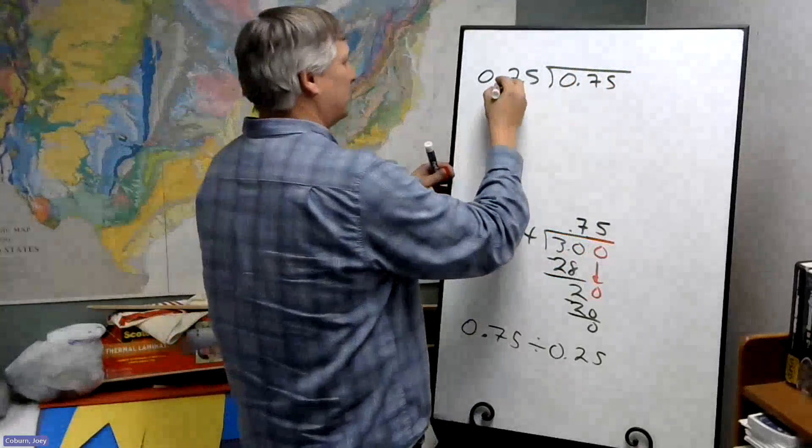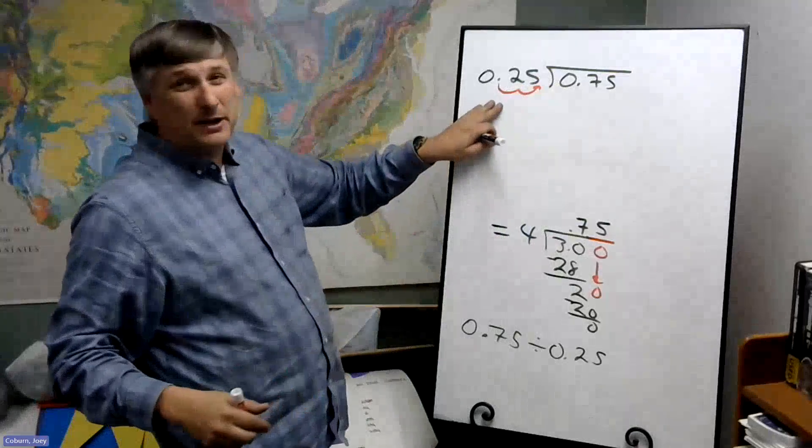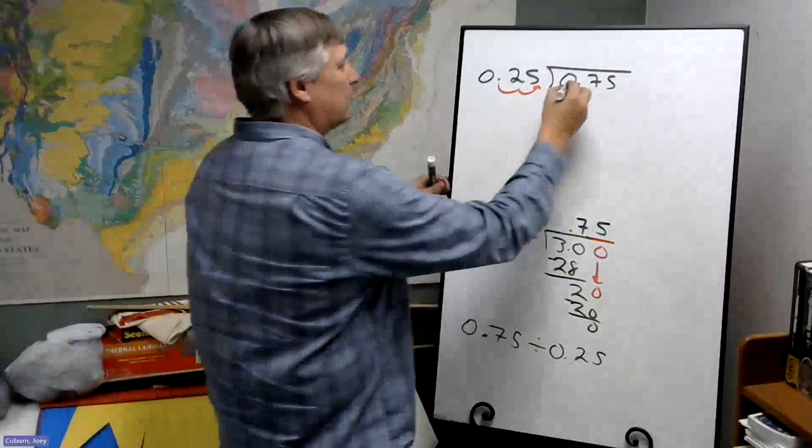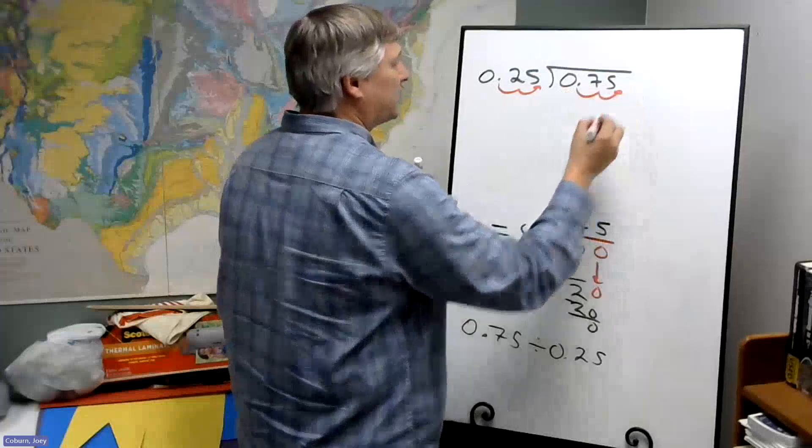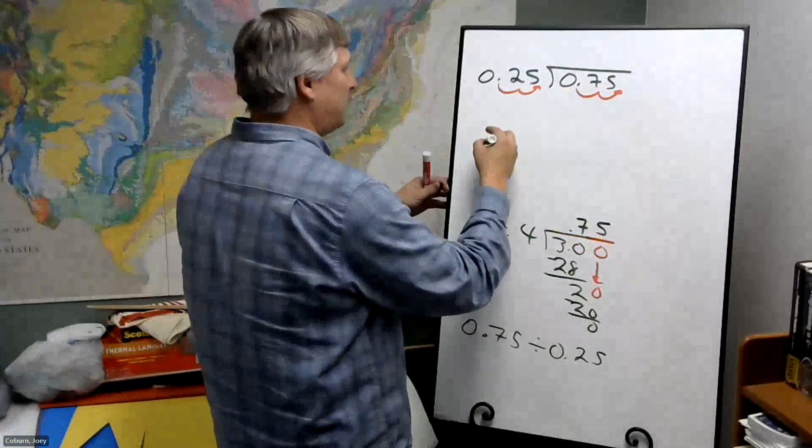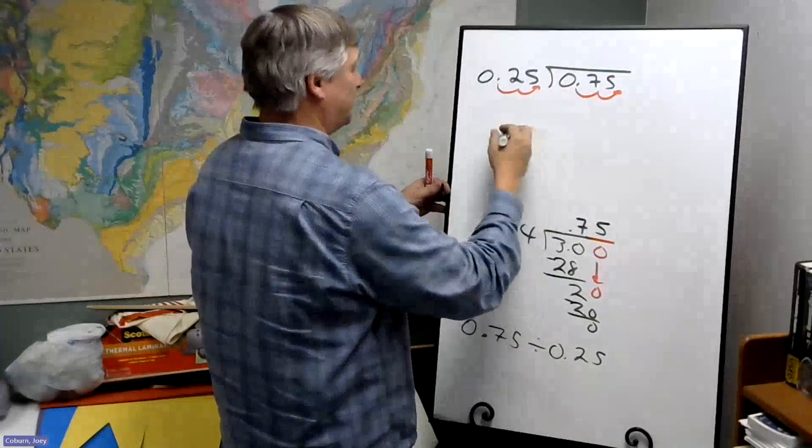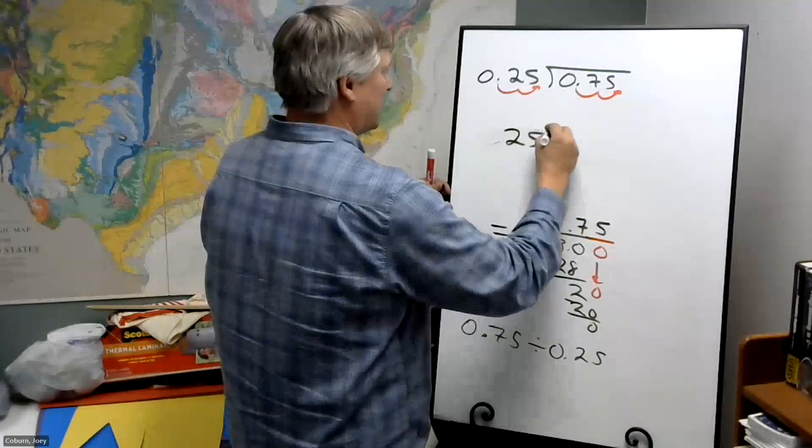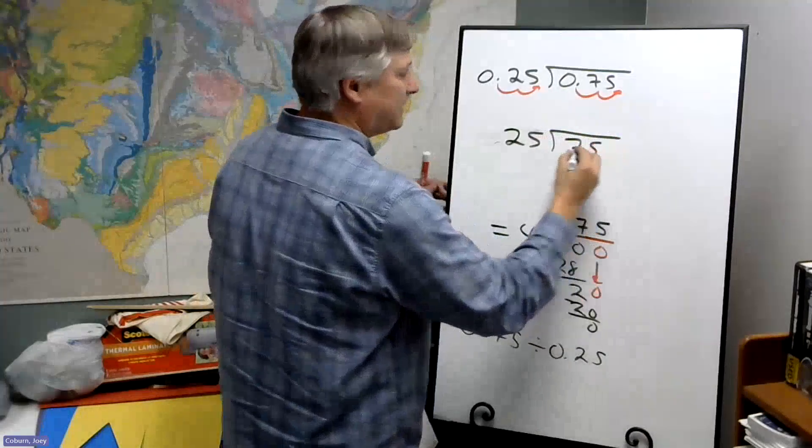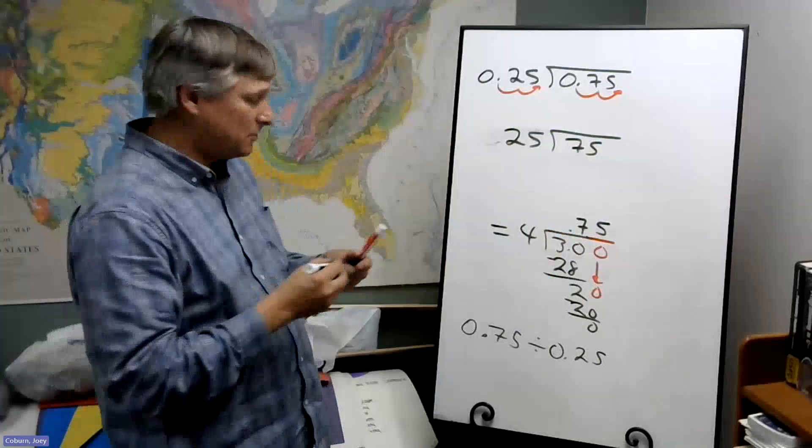Move our decimal. Remember, we want to make this a whole number. And the number of times we move the decimal here makes us move the decimal here also two times. And by coincidence, both numbers will turn out to be whole numbers. The only one we have to guarantee becomes a whole number is this one, but sometimes that turns out that way too.